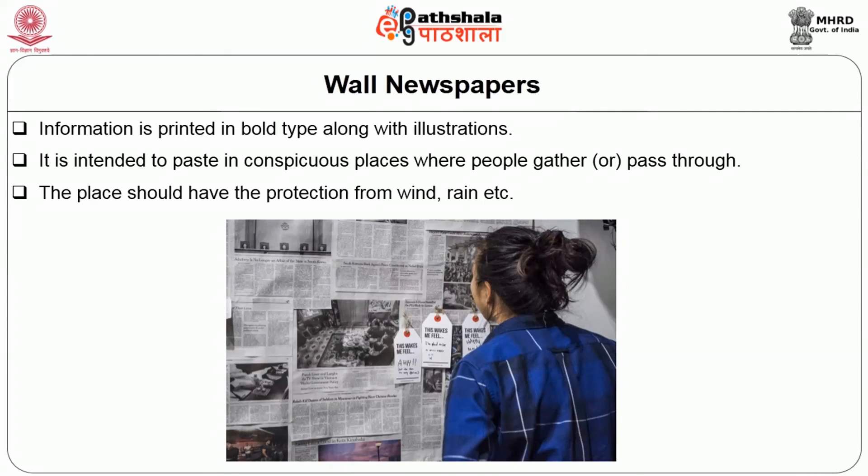From this lesson we can conclude that mass contact methods are all those means of conveying information to a large number of people by a single source. Farm publication is a class of publications prepared by the extension agency in printed form, containing information related to the improvement of farm and home. We can use various farm publications like leaflets, folders, pamphlets, bulletins, newsletters, journals, and magazines according to the needs of the situation.